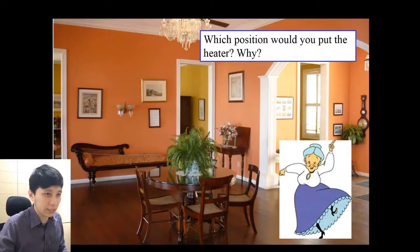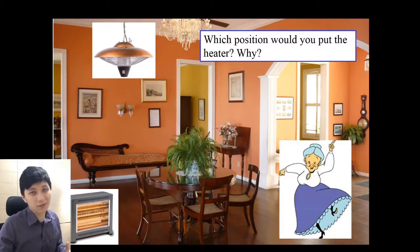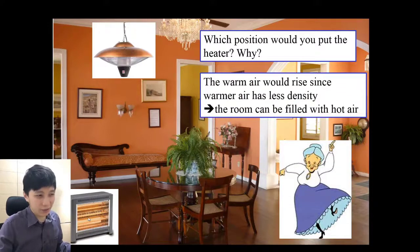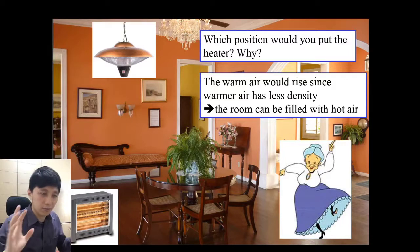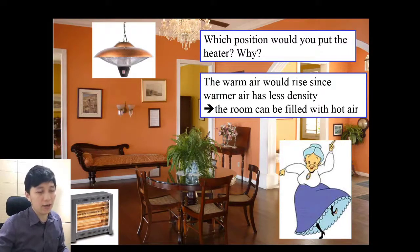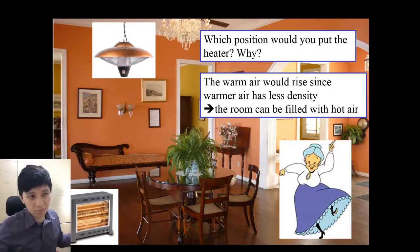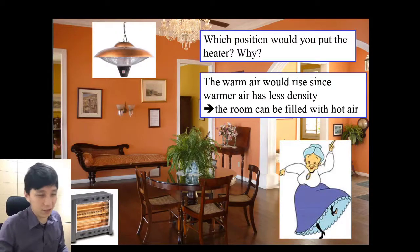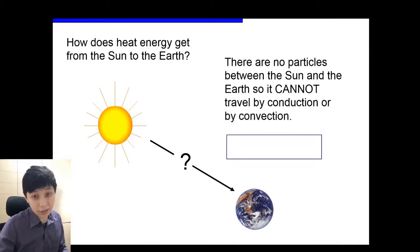A similar example — your grandma asks whether to put a heater at the top or at the bottom. The heater should be at the bottom because it warms the air, which becomes less dense and rises up. This ensures the room can be filled with hot air equally everywhere. If you put it only at the top, your upper body would feel very hot while your lower body stays cold.